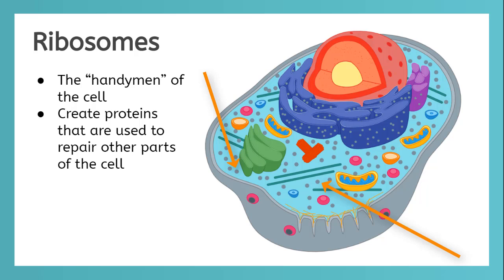The small gray dots floating in the cytoplasm are called ribosomes. Each type of cell has ribosomes. They're known as the handymen of the cell. They create specific proteins that are used to repair other parts of the cell.